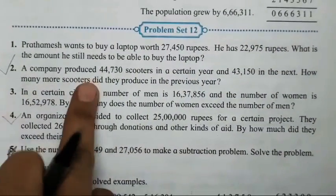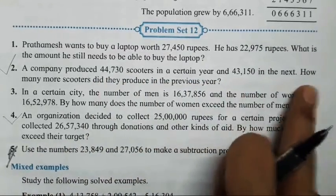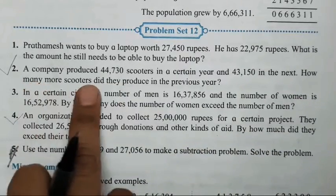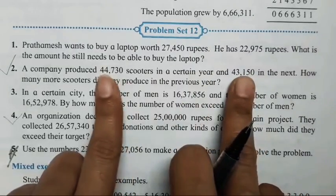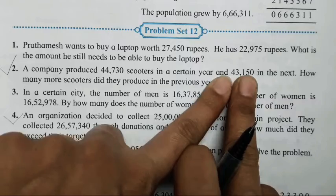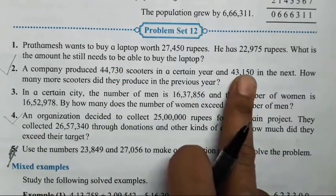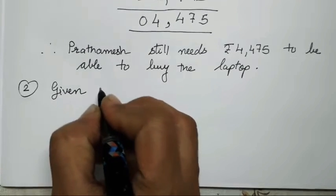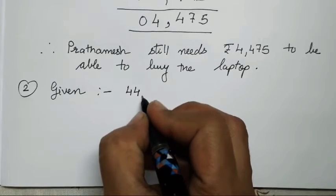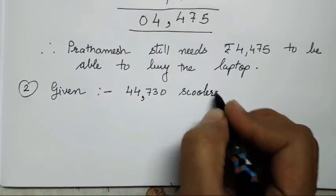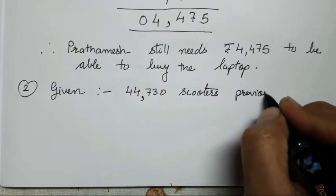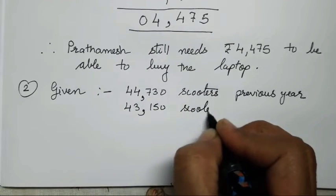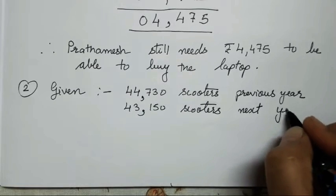A company produced 44,730 scooters in a certain year and 43,150 in the next year. This amount is greater, and this is smaller — meaning production decreased. The question is: how many more scooters did they produce in the previous year? So first we write what is given: 44,730 scooters in the previous year and 43,150 scooters in the next year.